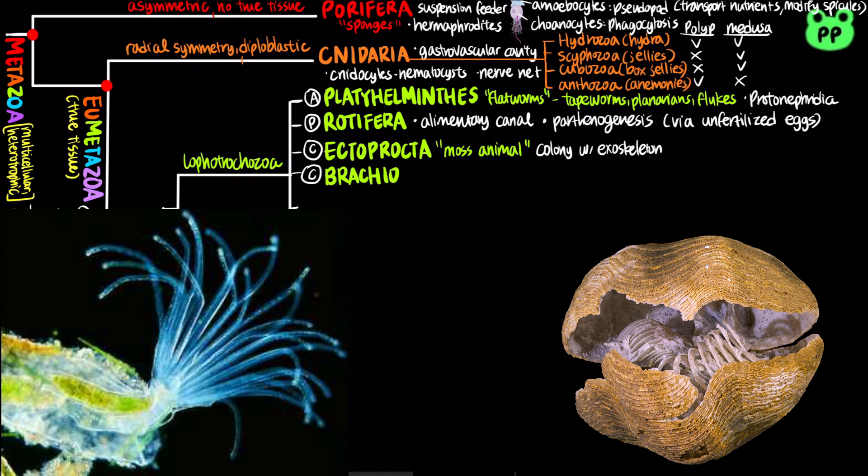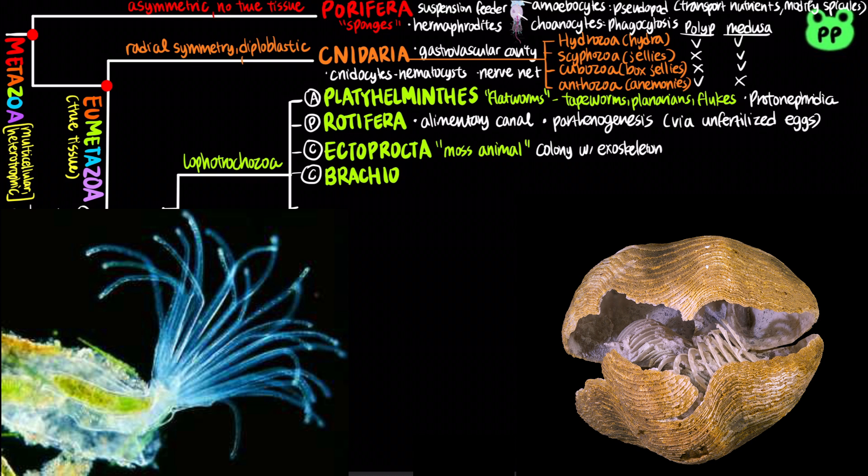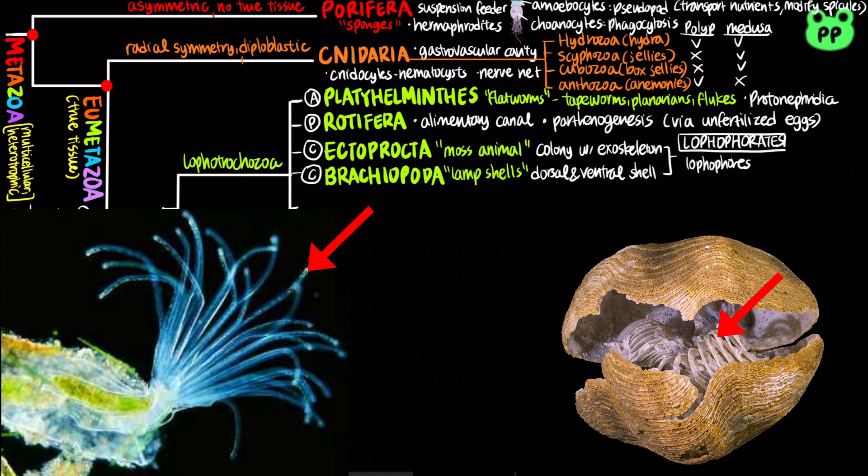The phylum Brachiopoda, or lamp shells, are marine coelomates that contain dorsal and ventral shells. Ectoprocta and Brachiopoda belong to a group known as lophophorates, characterized by the lophophore — a horseshoe-shaped suspension-feeding organ with ciliated tentacles.